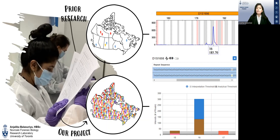What comes to mind when you think about forensic biology? Perhaps from all the police procedurals on TV, like CSI, Forensic Files, or NCIS, you think of DNA. Generating DNA profiles for human identification is, in fact, a critical component of forensic cases.